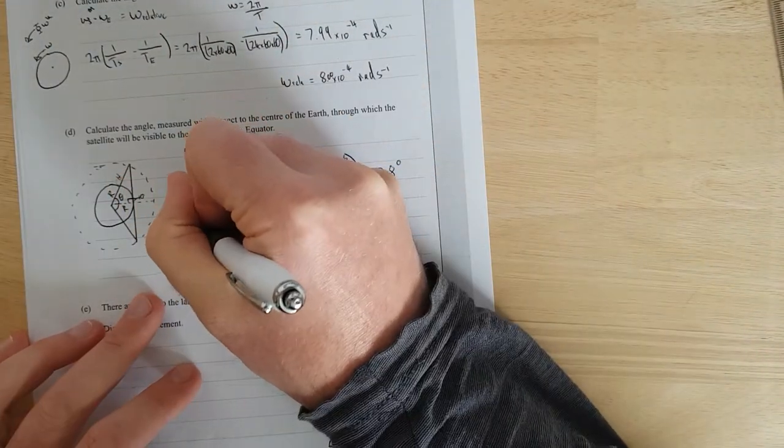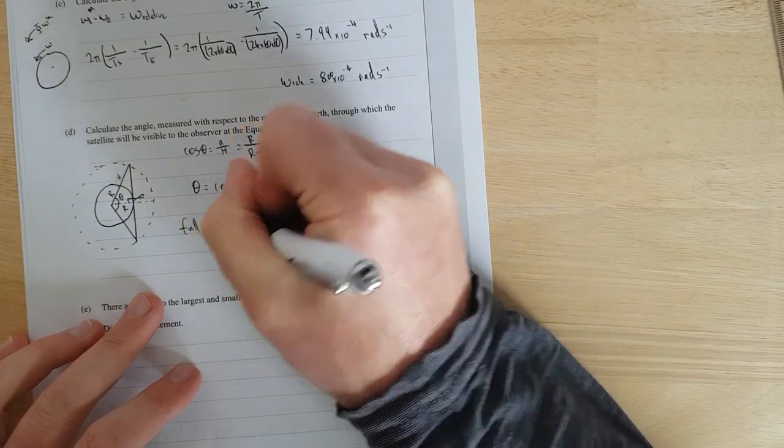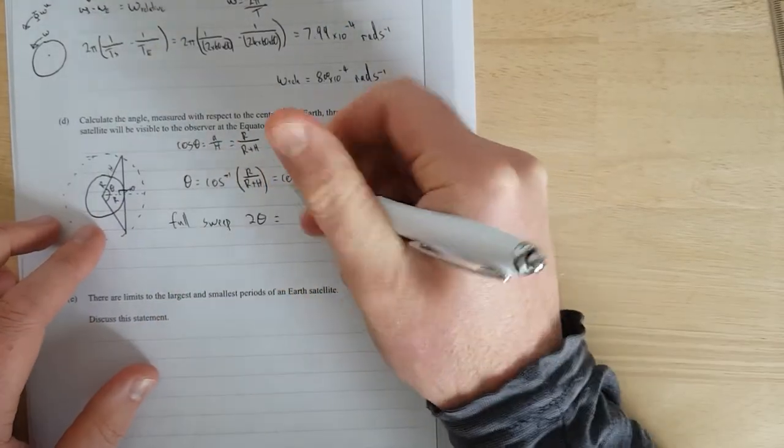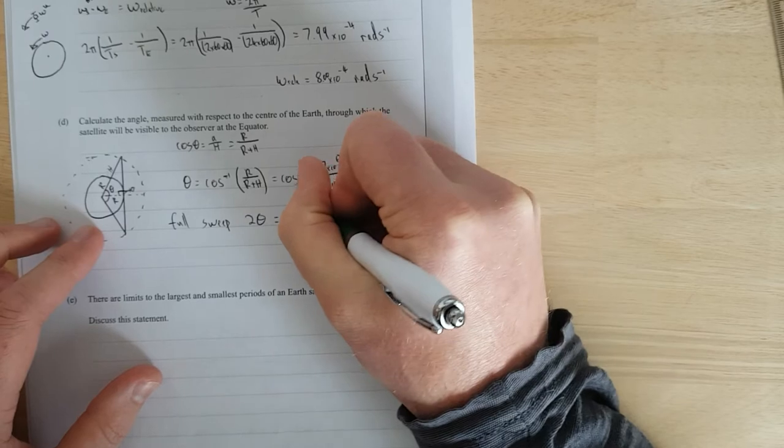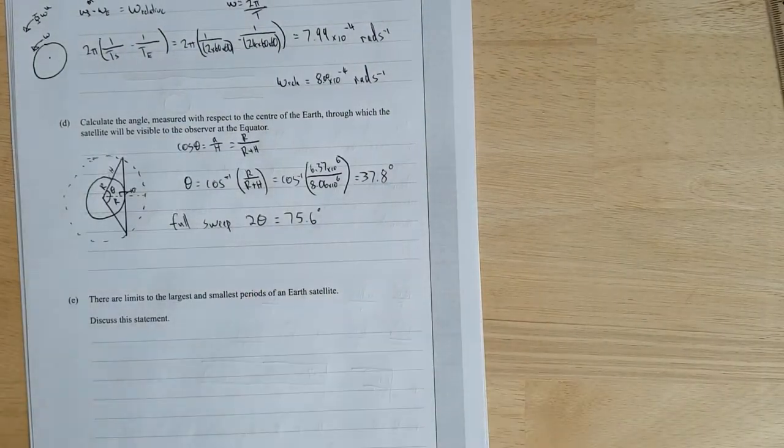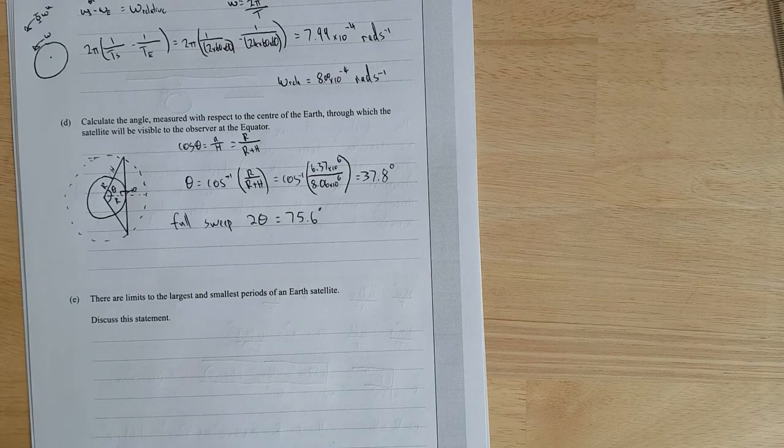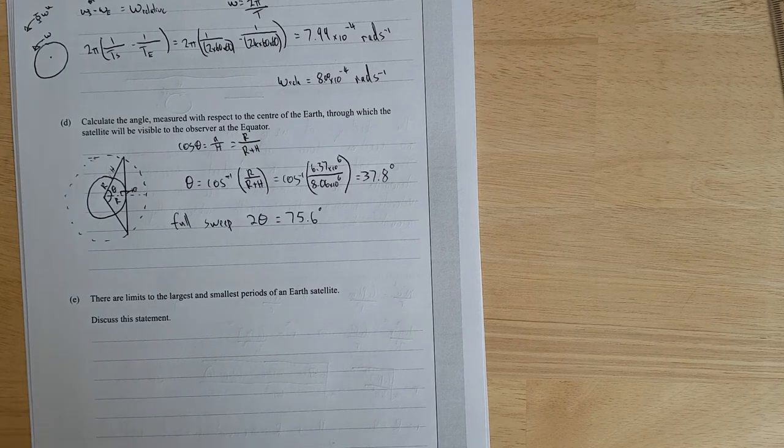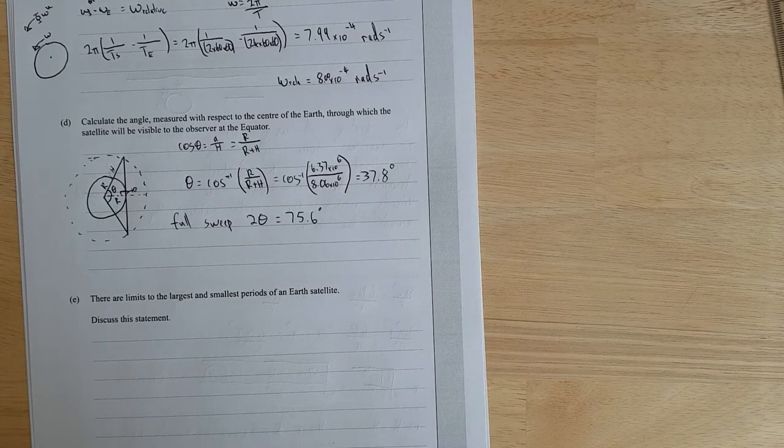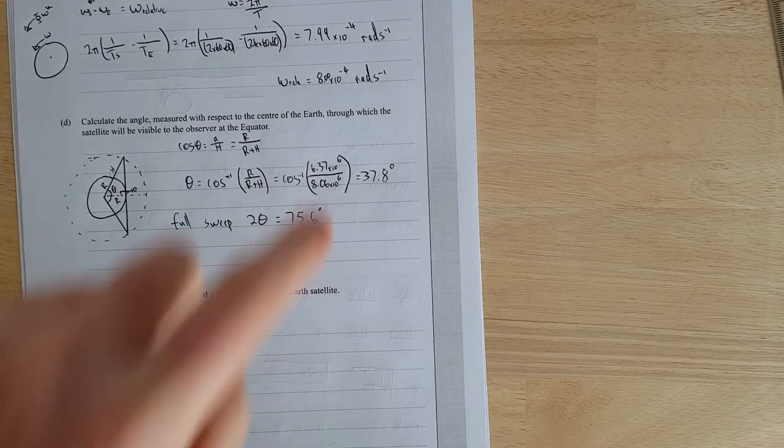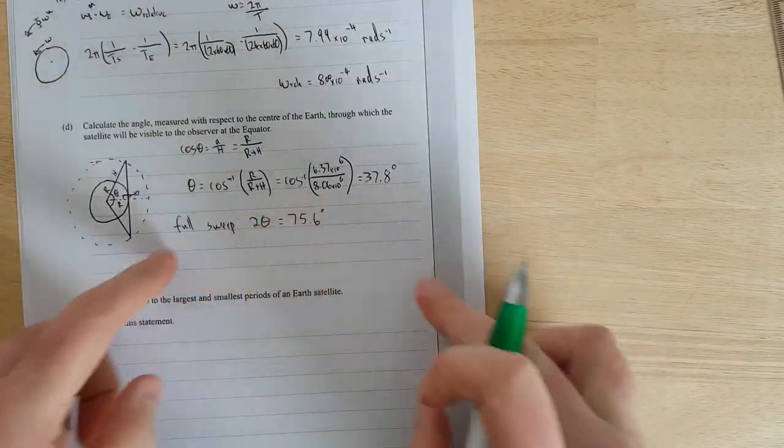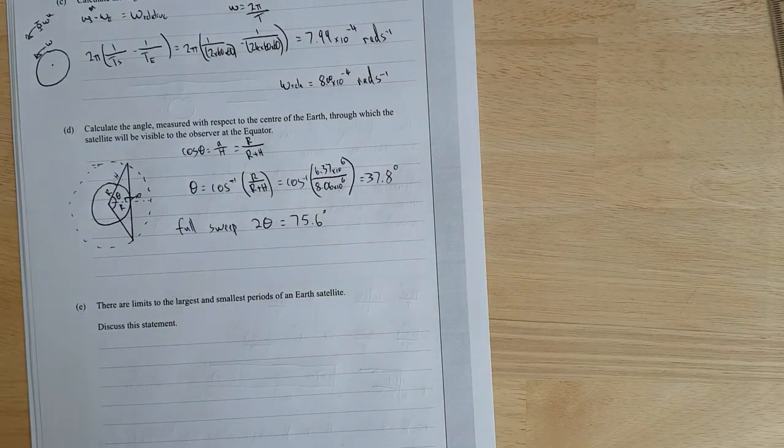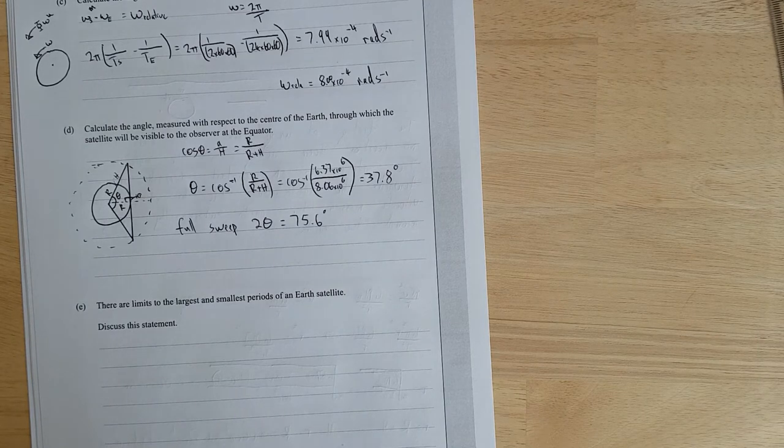So full sweep is 2θ because it's from here all the way around so that is going to be equal to 75.6 degrees. Similar question to this I think a few years ago it was a modern physics scholarship question where it was like a laser was shining on the moon and you had to count up how many photons were hitting inside like a circular patch on the moon and you had to use a similar trick to doing that. It's been a while since I did that exam it might have been like 2 or 3 years ago. I think it might be the 2017 scholarship exam, maybe the 2018 it's one of them anyway.